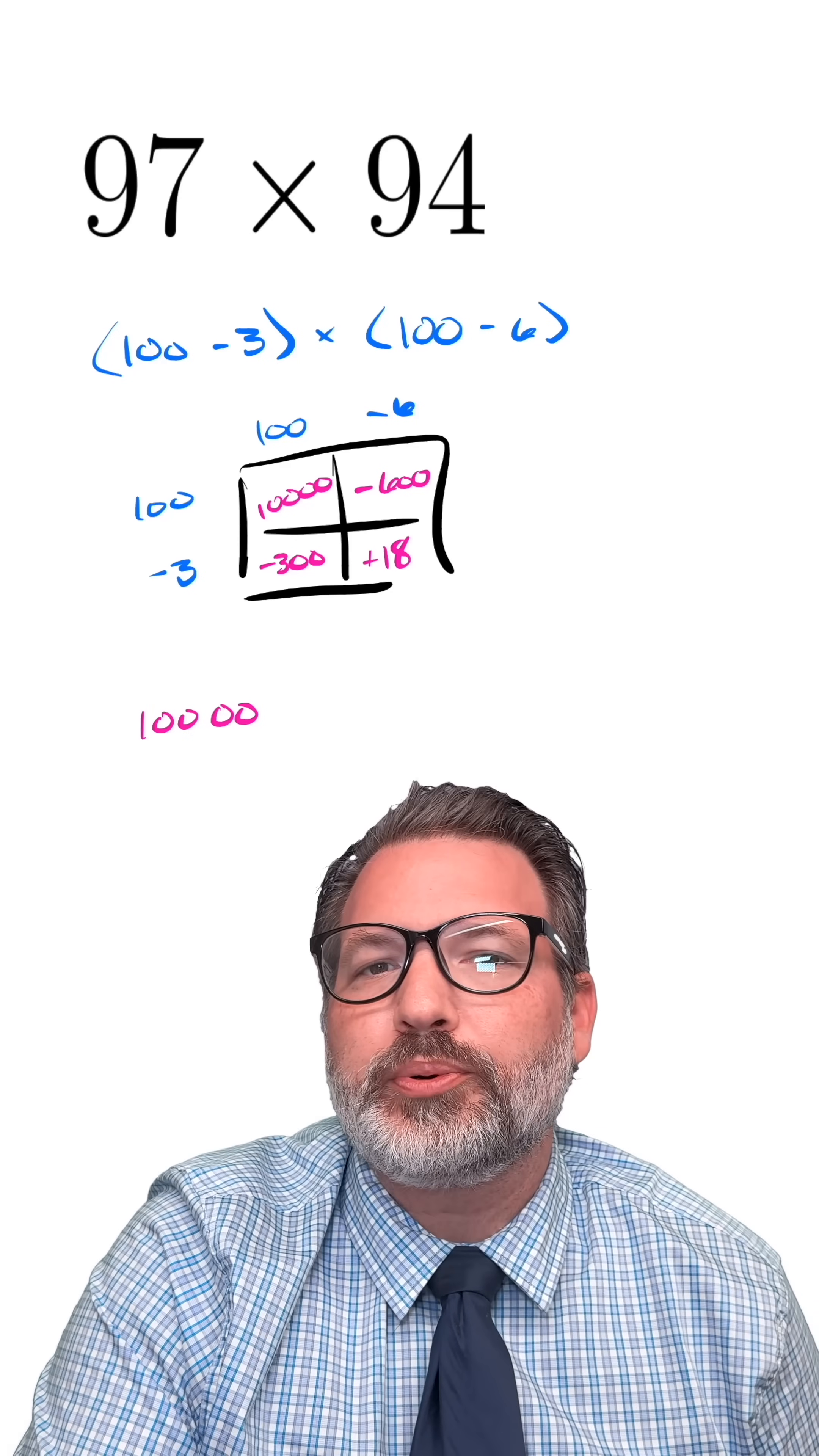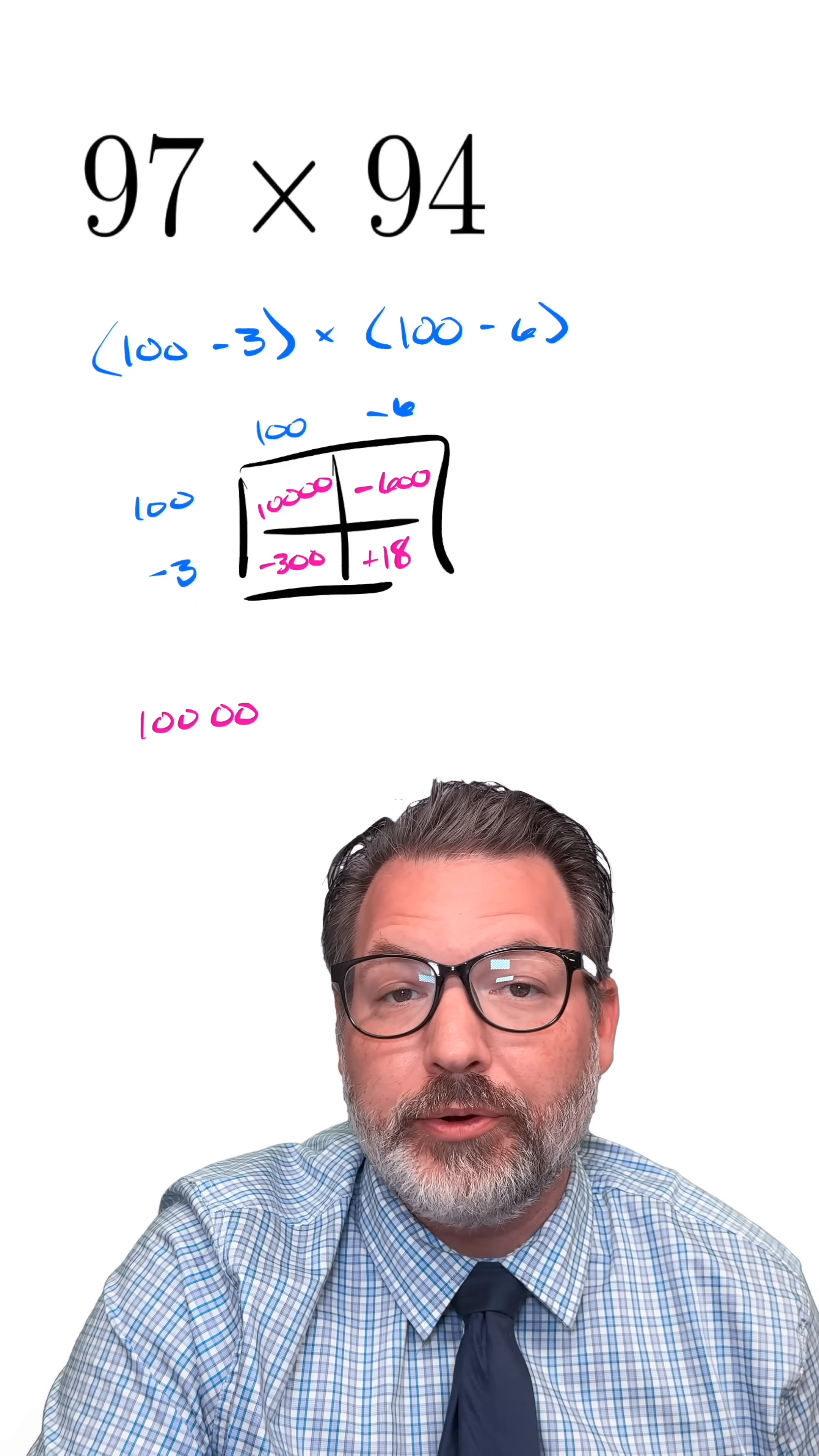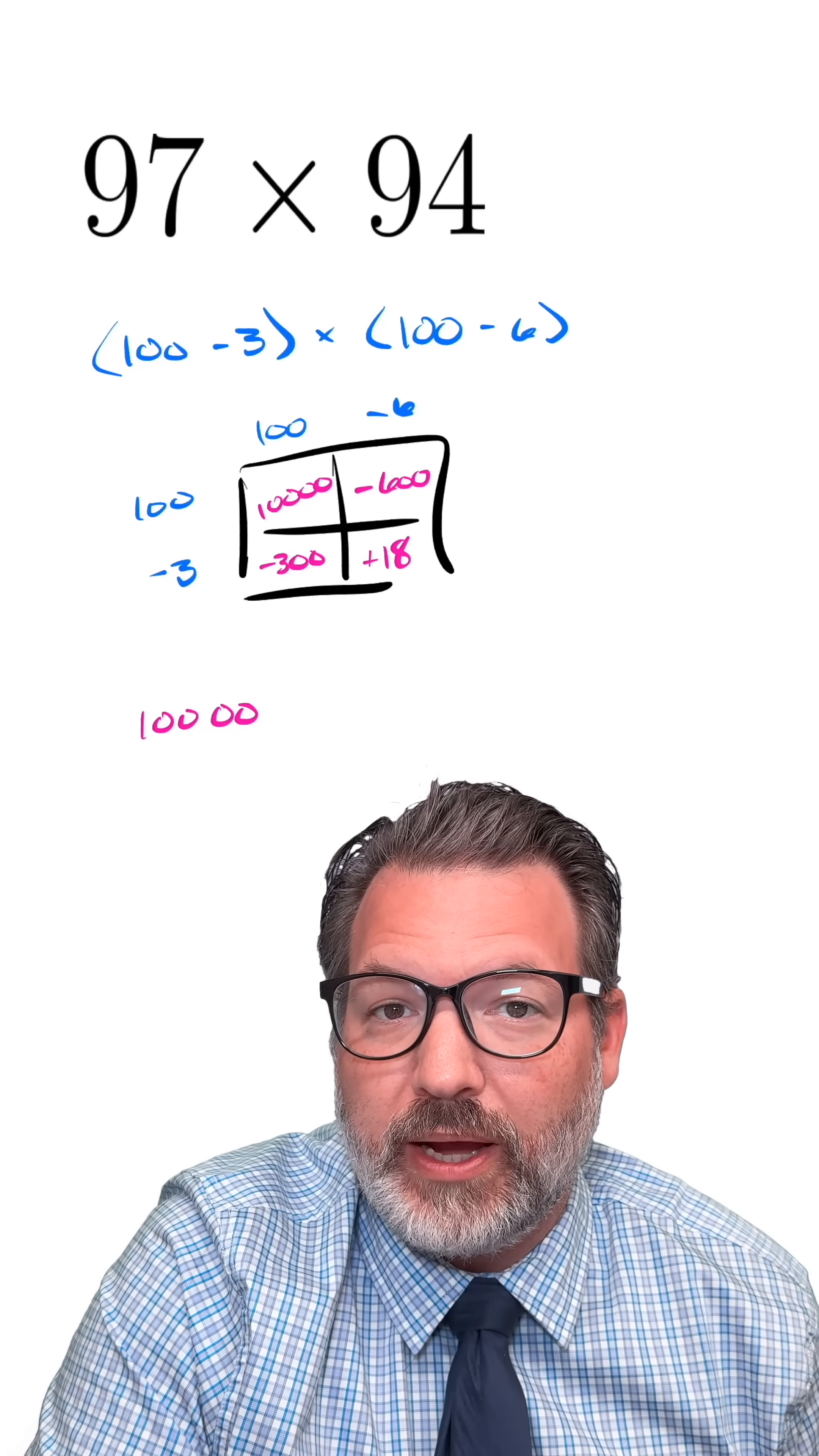you'll notice our total product is going to be close to 10,000 because both of the numbers we're multiplying are close to 100. That's the whole idea behind this trick.